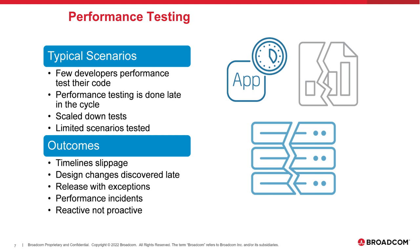Some of the challenges we typically see: can developers performance test their code early in the cycle? We see that performance testing is often done at the end or later in the cycle. Customers tell us that prior to using service virtualization, they had to scale down their tests. A performance environment that truly matches production can be incredibly expensive, so they extrapolate from maybe 30% of typical load. They might not test certain scenarios, especially negative or hard-to-reproduce ones. Problems discovered late mean timelines slip and more troubleshooting is required.